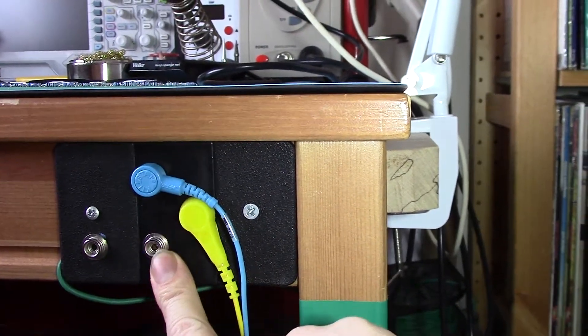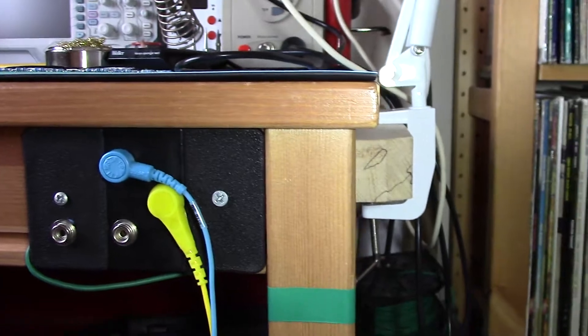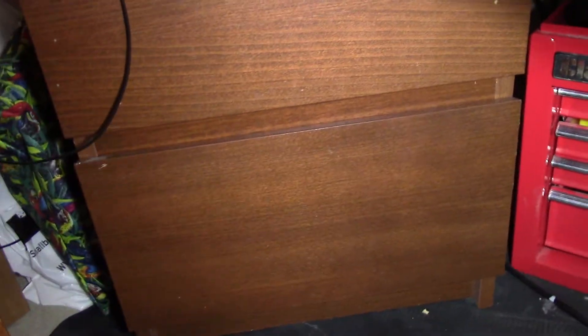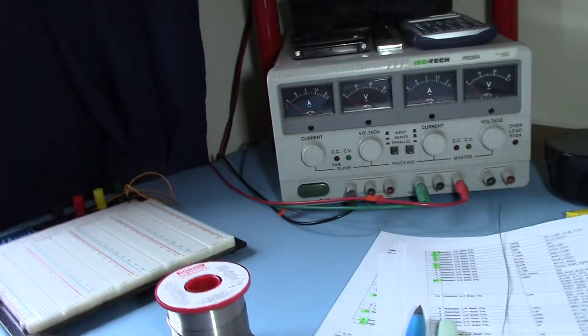And the yellow one goes to the back of the mat, just behind the power supply there, so it's not actually visible.